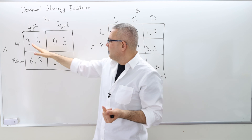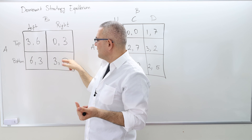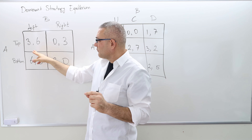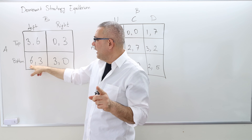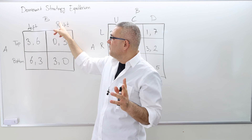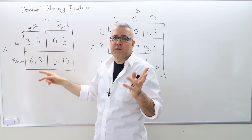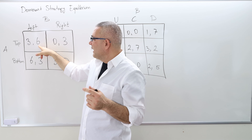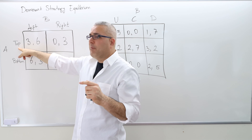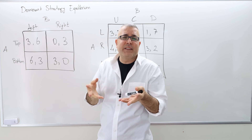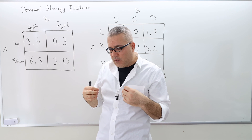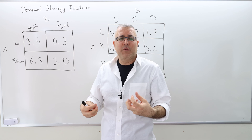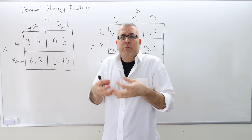The assumption is that these players are trying to maximize their payoffs, so the highest number is the best. The highest payoff is 6 for player A and 6 for player B. This is not a symmetric game. Player A can achieve his highest payoff only if player B plays left, and player B can get his highest payoff only if player A plays top. So there is no outcome where both agents get their highest payoff simultaneously.